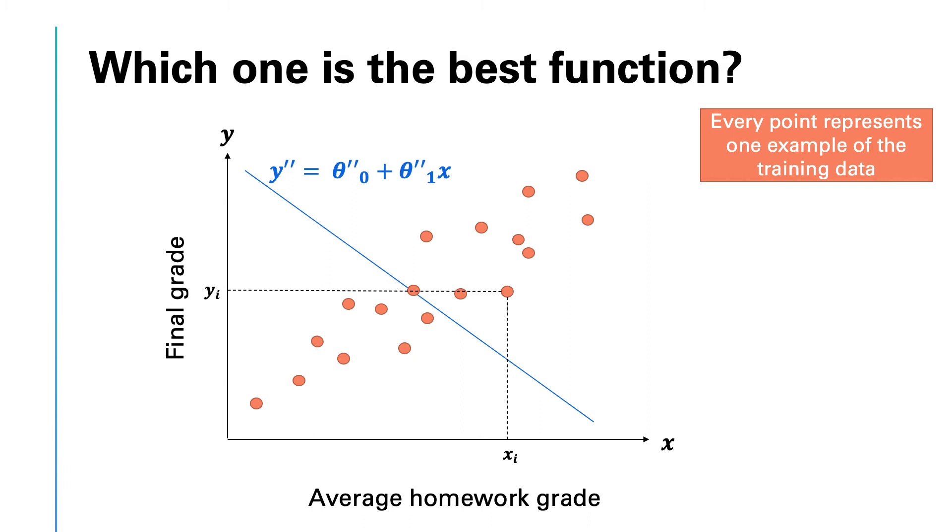However, the function gives a different value of y. The discrepancy between the real value and the one predicted by the function is the error or residual for this specific xᵢ. We can do the same for all of the other data points and calculate the residuals for each data point.